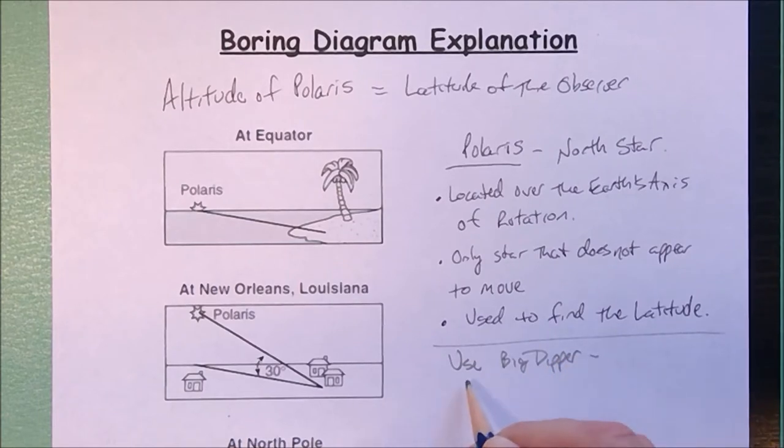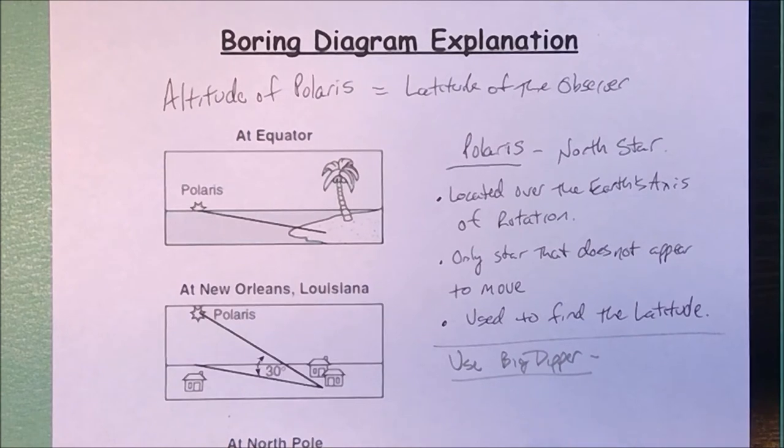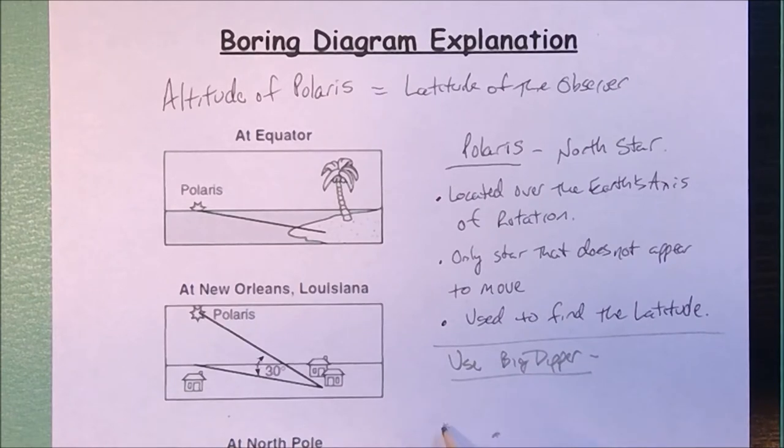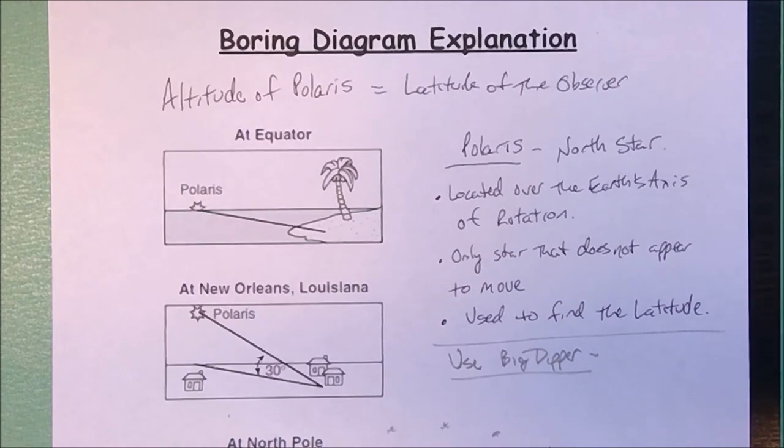The Big Dipper is part of Ursa Major, but it's one of the most familiar constellations. If you look at the Big Dipper, there are four stars that sort of make up the ladle. In your mind's eye, most people will connect those stars. The Big Dipper is going to look like a large ladle.